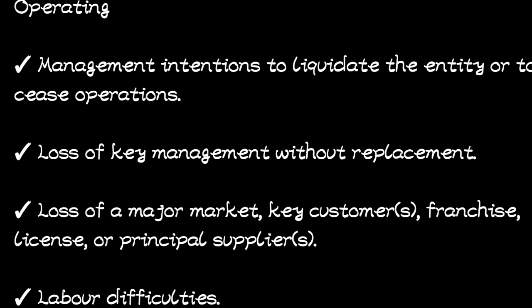Moving to operating indicators: the first is management's intention to liquidate the entity or cease operations — if management is thinking of closing the business soon, it signals problems. Another is loss of key management without replacement. Also, loss of a major market, key customers, franchise, license, or principal suppliers — if the entity keeps losing major customers or major suppliers, it shows there is a problem.